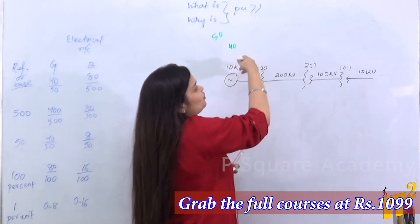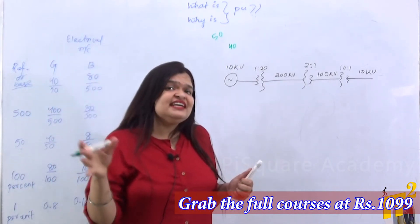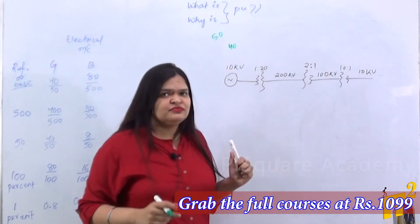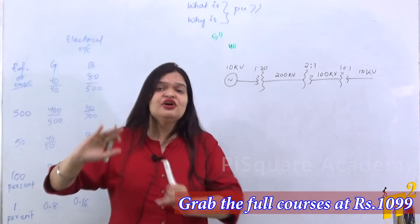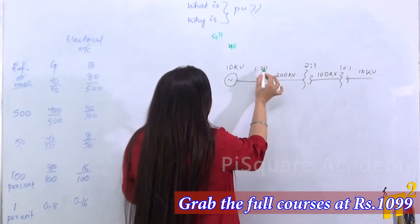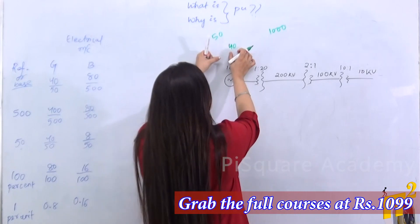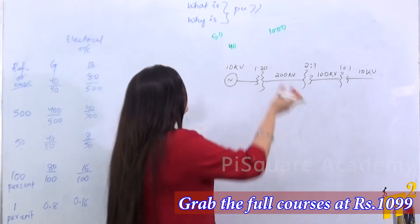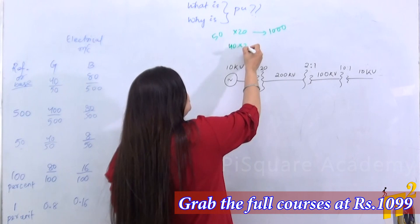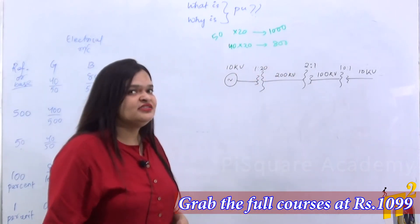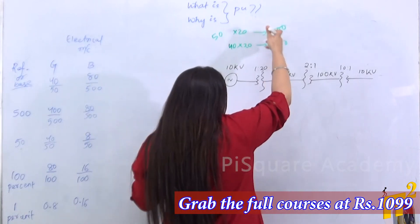To relate this to our marks example: this girl is going to some foreign country for higher studies, where they want marks in the range of 1000. Should she send a score of 40? No. She needs to scale up her marks to the range of 1000. The scaling ratio is 1:20, so when the total marks become 1000, you multiply by 20 — 50 into 20 is 1000, and 40 into 20 is 800. So in that country, her 40 marks becomes 800 because their total marks range up to 1000.